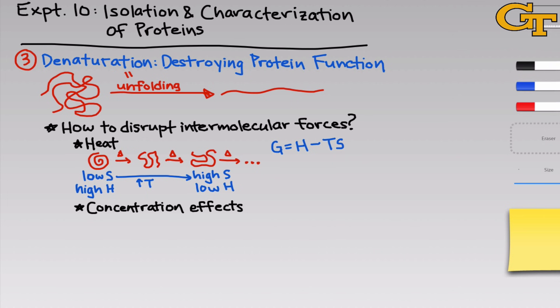The second general method uses concentration effects. The basic idea is to swamp out the intermolecular forces between elements of the polypeptide chain by introducing other molecules — small molecules in water — that can engage in intermolecular forces with the polypeptide chain. This breaks apart interactions between elements of the polypeptide chain by replacing them with interactions between small molecules and the chain. Molecules like urea and other hydrogen-bonding molecules can cause unfolding by concentration effects; it requires a large concentration of the small molecule, which is why it's called concentration effects.